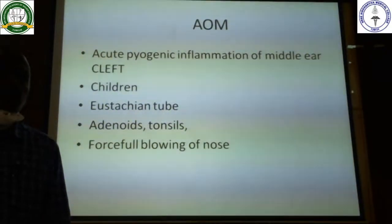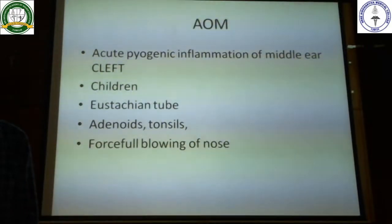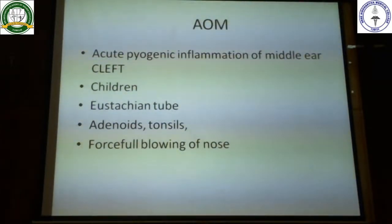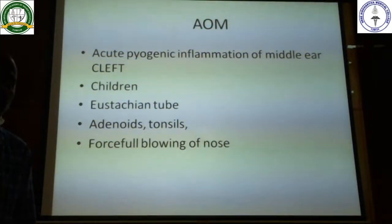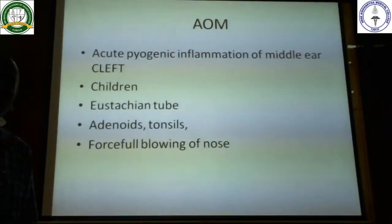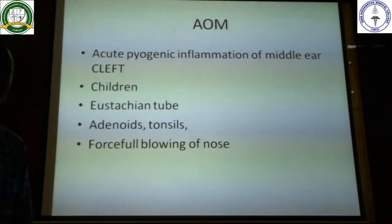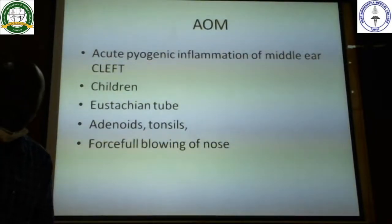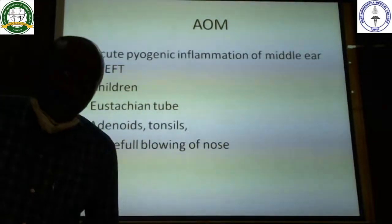There are many reasons proposed for why more children get affected. One key reason is the Eustachian tube — in children, as you may recall from anatomy, it is shorter and more horizontal compared to adults. This facilitates easy entry of organisms from the nasopharynx into the middle ear cleft through the Eustachian tube. Adenoids and tonsils are also contributing factors.